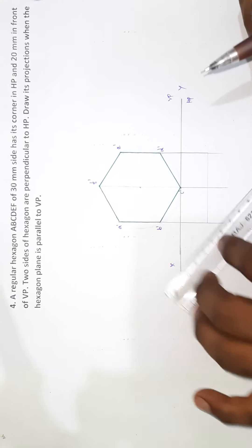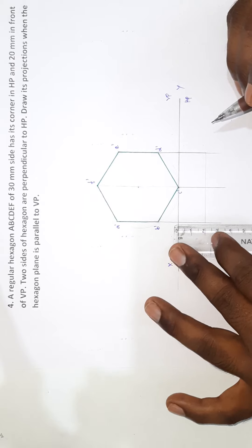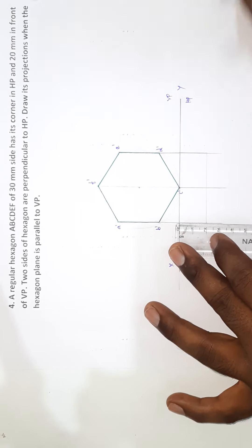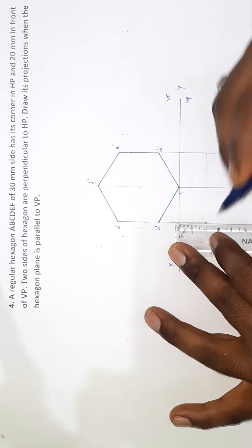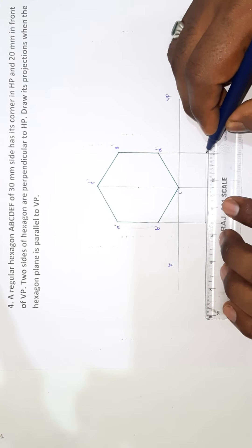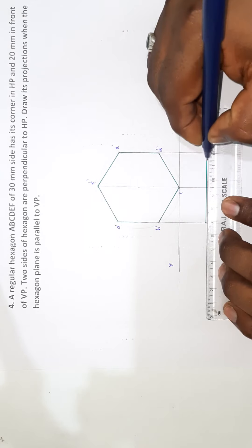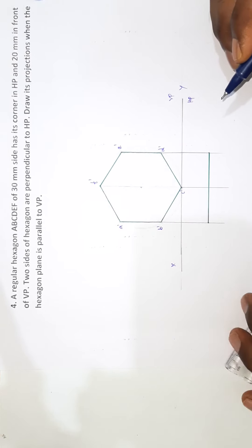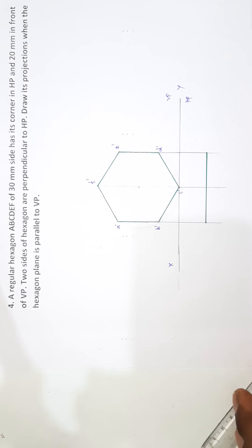Now this condition is dropped. You can see 20mm in front of VP. So mark 20mm here. Marked — here is the top view drop. Now the top view is dropped.